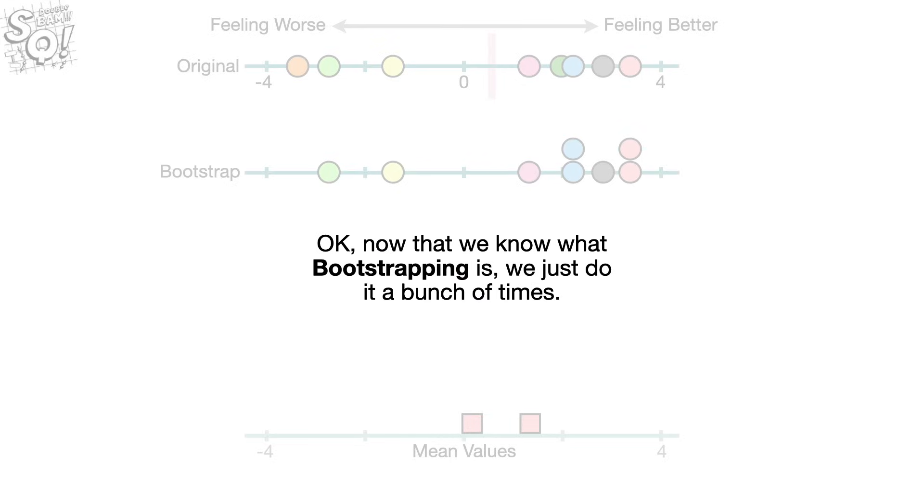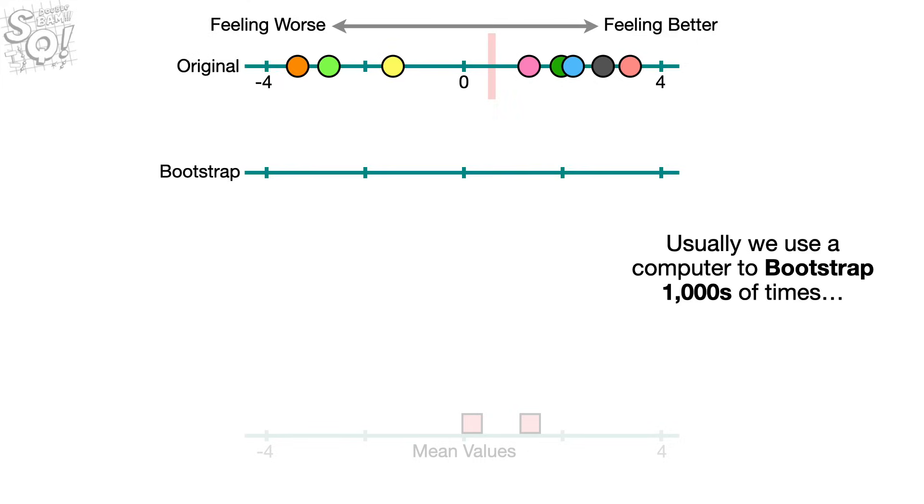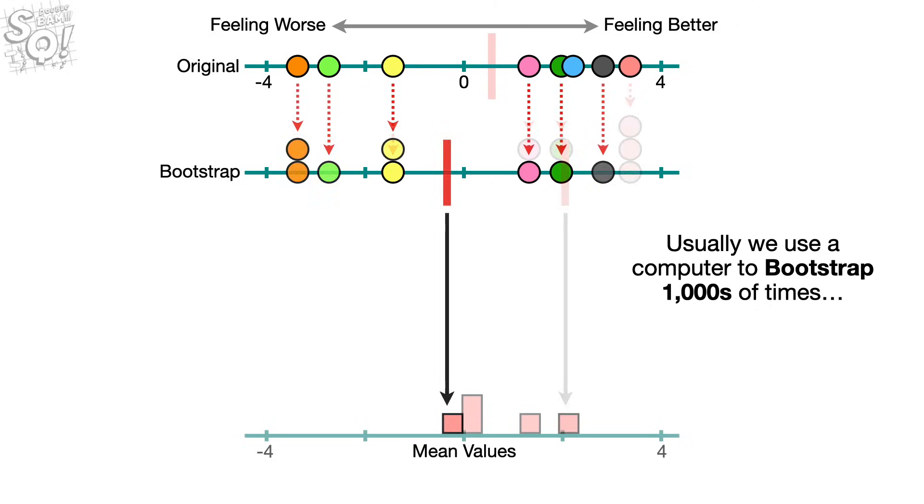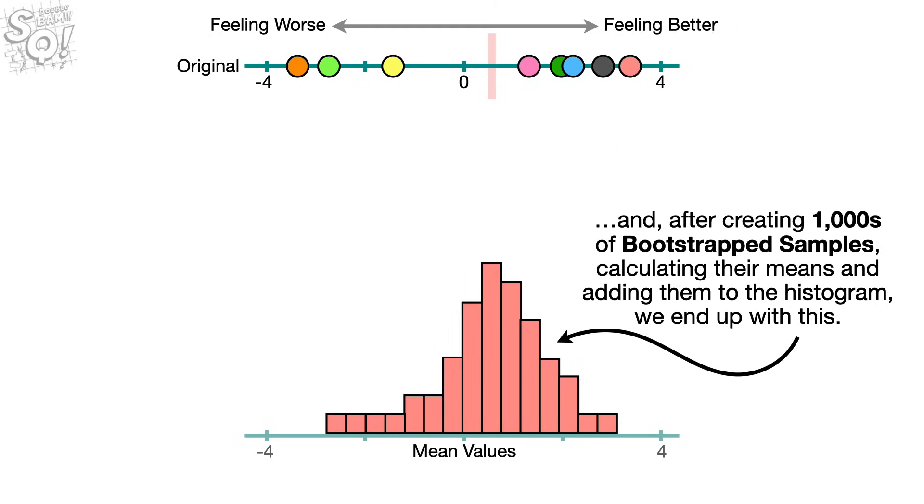Okay, and now that we know what bootstrapping is, we just do it a bunch of times. Usually, we use a computer to bootstrap thousands of times. And, after creating thousands of bootstrap samples, calculating their means, and adding them to the histogram, we end up with this.